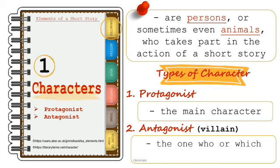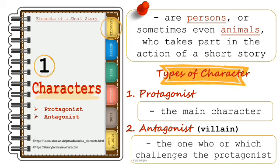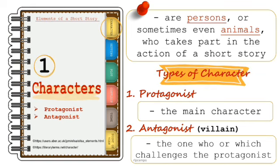The antagonist is the one who or which challenges the protagonist. It is also considered a villain. The antagonist is not always a human being — sometimes it is nature or the challenges that the protagonist is facing, as in a story like 'To Build a Fire.' In a story there must be an antagonist.